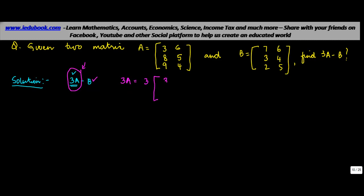Let's first find 3A. 3A equals 3 times the matrix [3, 8, 9, 6, 5, 4]. Now this matrix can represent any data. When we multiply a matrix with a scalar number or constant number, we multiply each and every element in that matrix with that number.